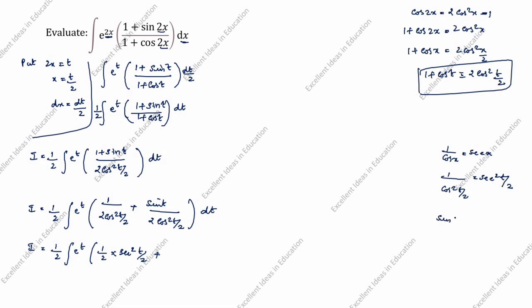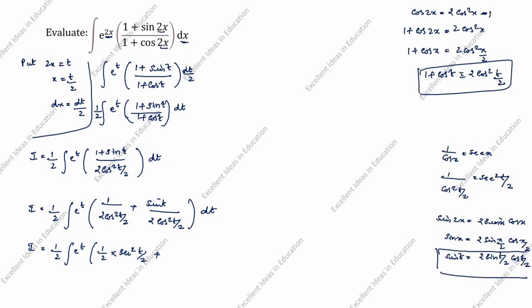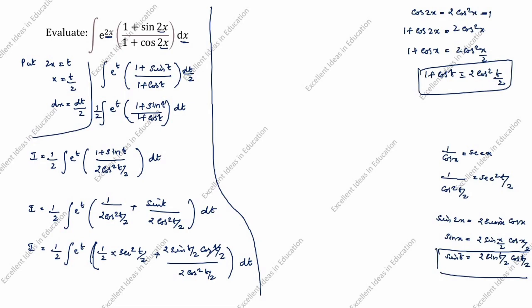Now we expand sin t using the double-angle formula: sin2x = 2sinx·cosx, so sint = 2sin(t/2)·cos(t/2). We substitute: sin t divided by 2cos²(t/2) becomes 2sin(t/2)·cos(t/2) divided by 2cos²(t/2). The factor cos(t/2) in numerator and denominator cancels, leaving sin(t/2)/cos(t/2), and the 2s also cancel.